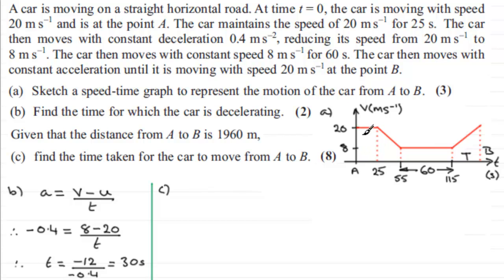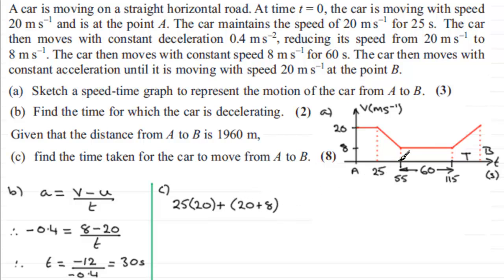Let's form an equation. The first rectangle has width 25 and height 20, so that's 25 multiplied by 20. Then we add the trapezium: the sum of the parallel sides is 20 plus 8, multiplied by the distance apart which is 30, all divided by 2. Next, the rectangle with width 60 and height 8 gives plus 60 multiplied by 8.